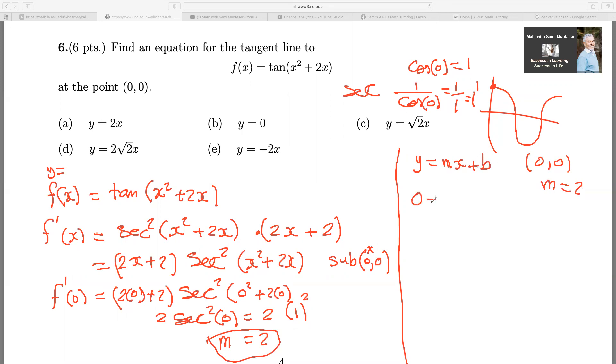So I got 0 equals m, which is 2 times 0 plus b. 0 equals 0 plus b. b equals 0.